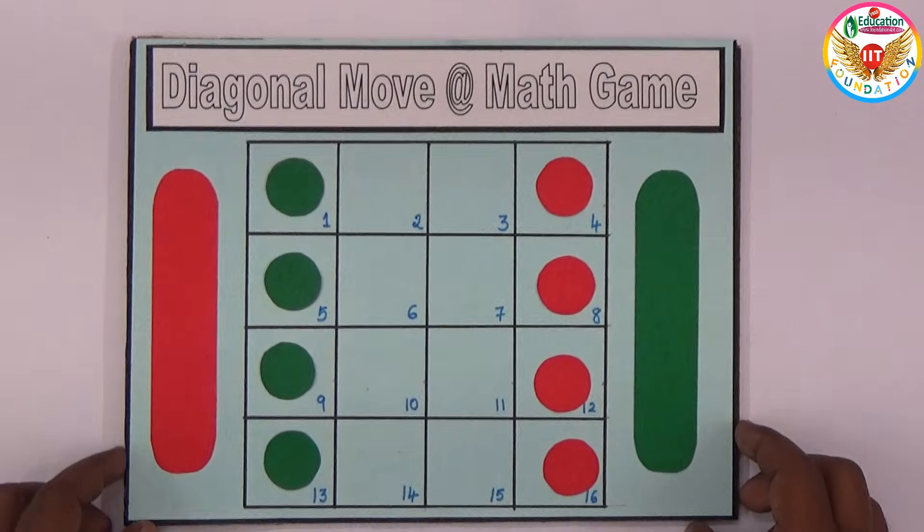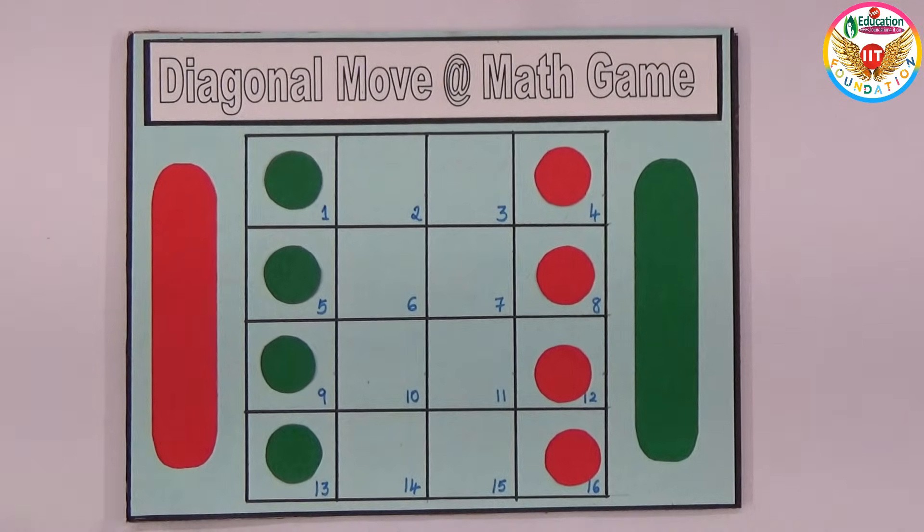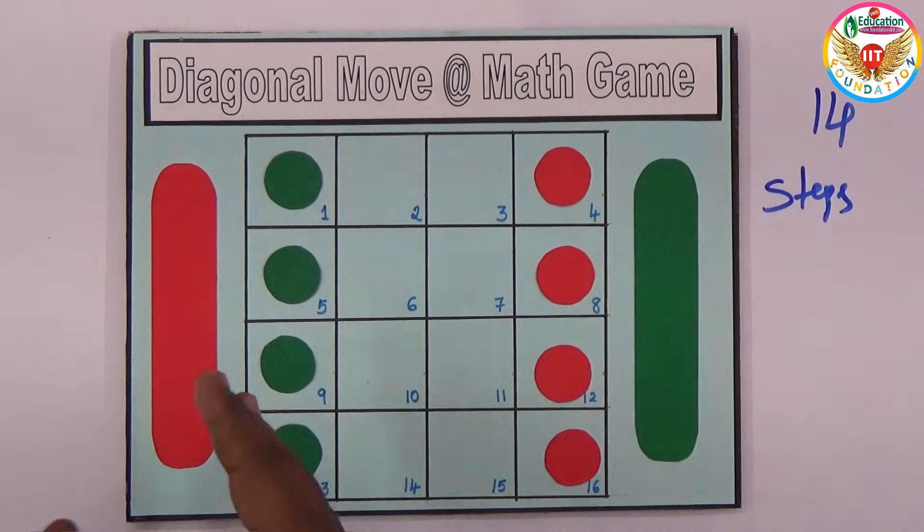Let's see how many steps you can do. The limit is only within 14 steps to interchange red to green and green to red.